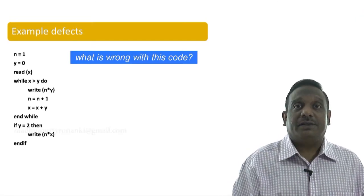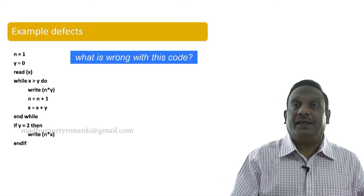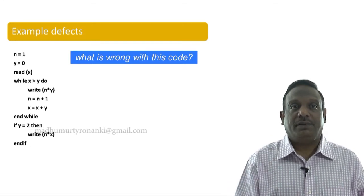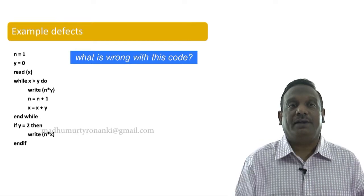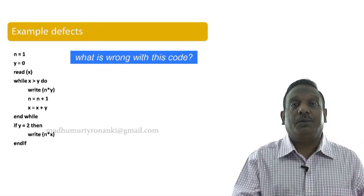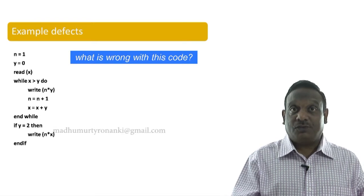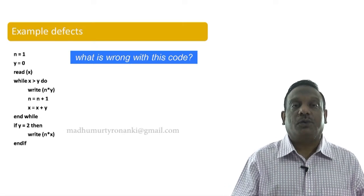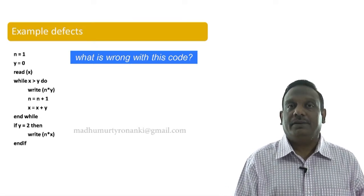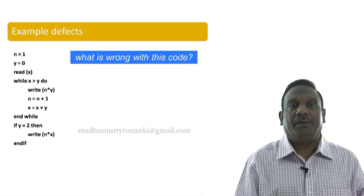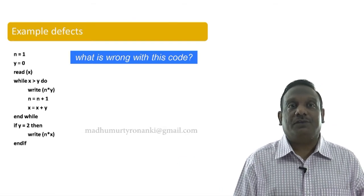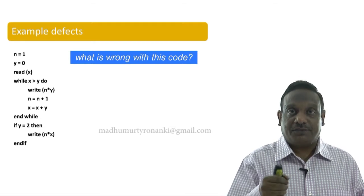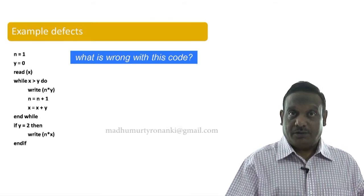Just calculate in your mind what happens. Let us say we enter the loop with x equal to 5 and y equal to 0. It will enter the loop and execute: write n multiplied by y, then n equals n plus 1 so n becomes 2, then x equals x plus y which is 5 plus 0, still 5. The value of x has not changed. So it will go back to the beginning of the loop — x is still 5, y is still 0.